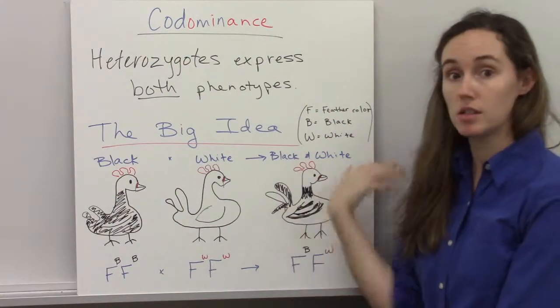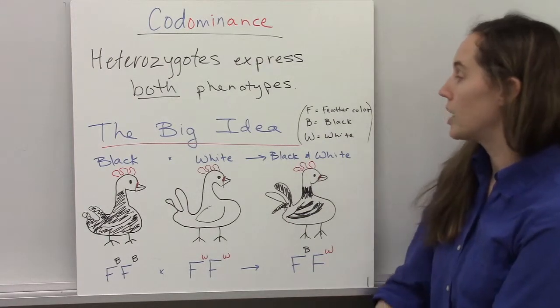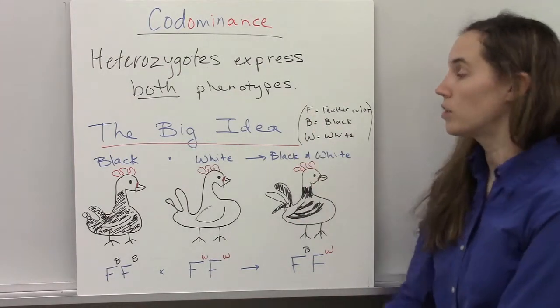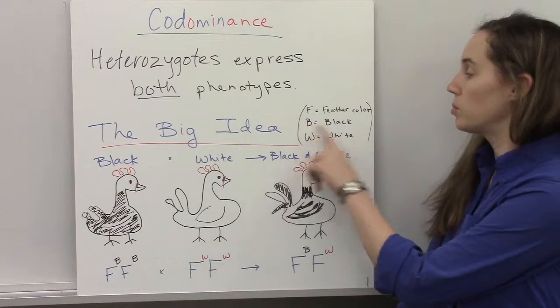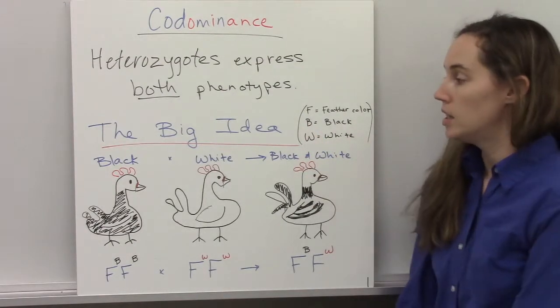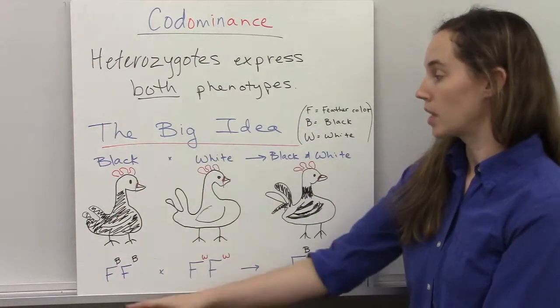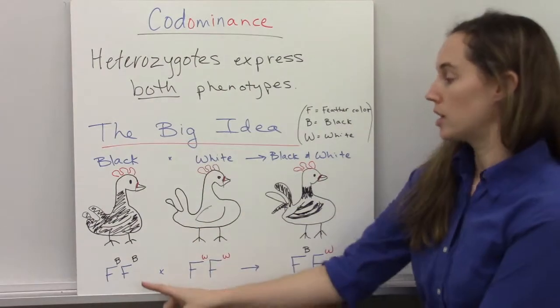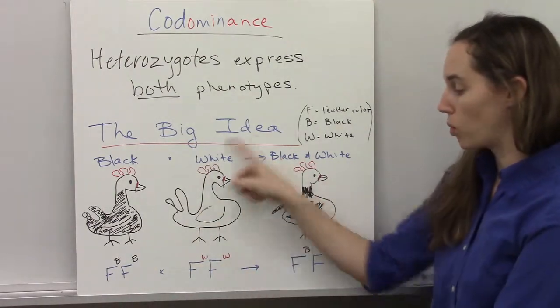So for instance, the big idea here is say we're going to use the letter F for feather color, B for black, and W for white. So if you have a black chicken, a homozygous black chicken, and a homozygous white chicken, if they were to breed together,